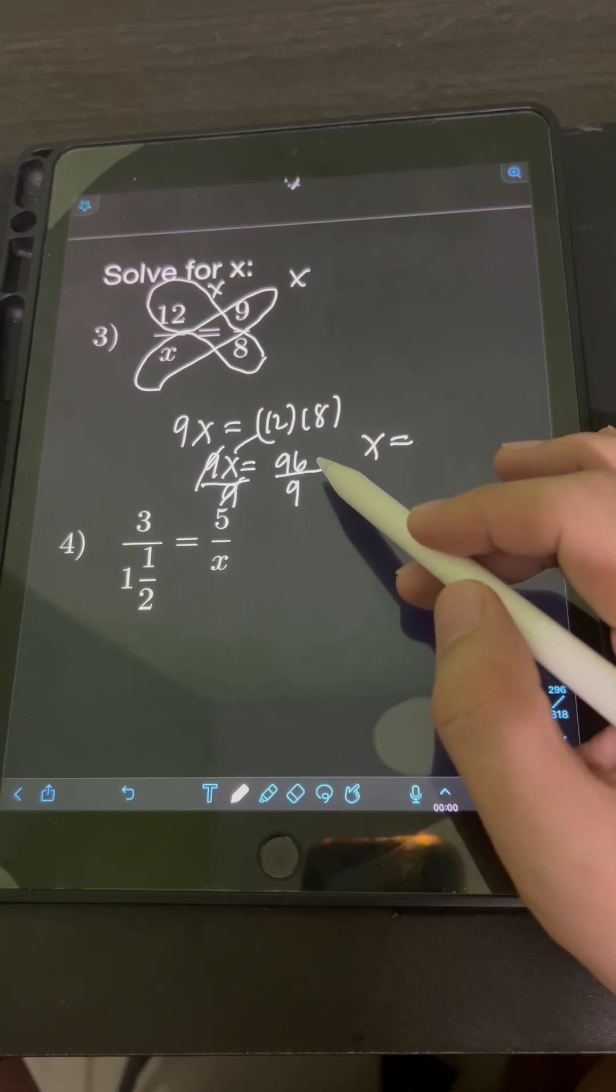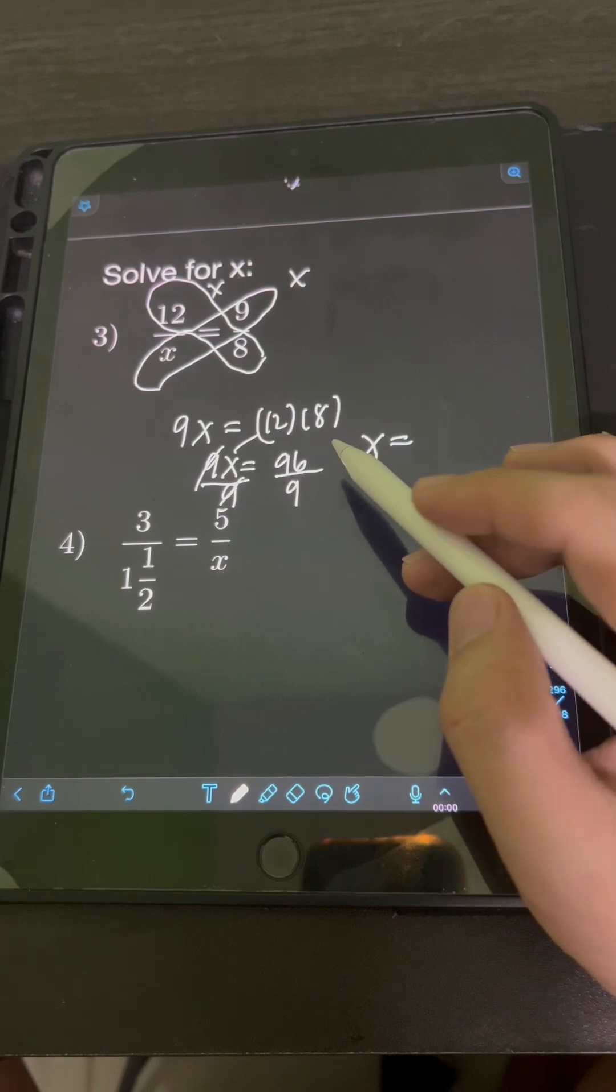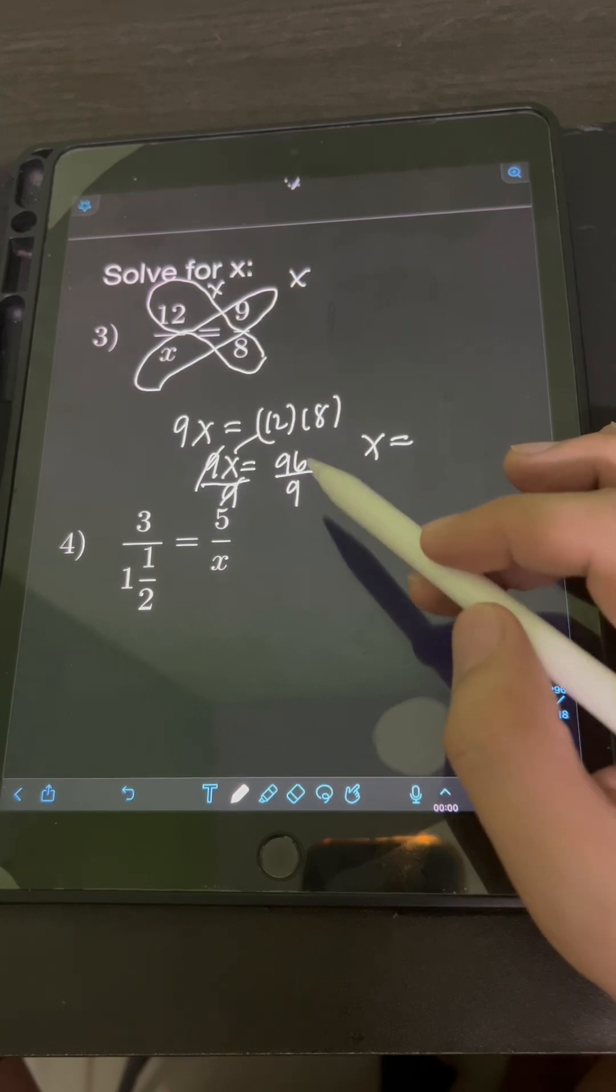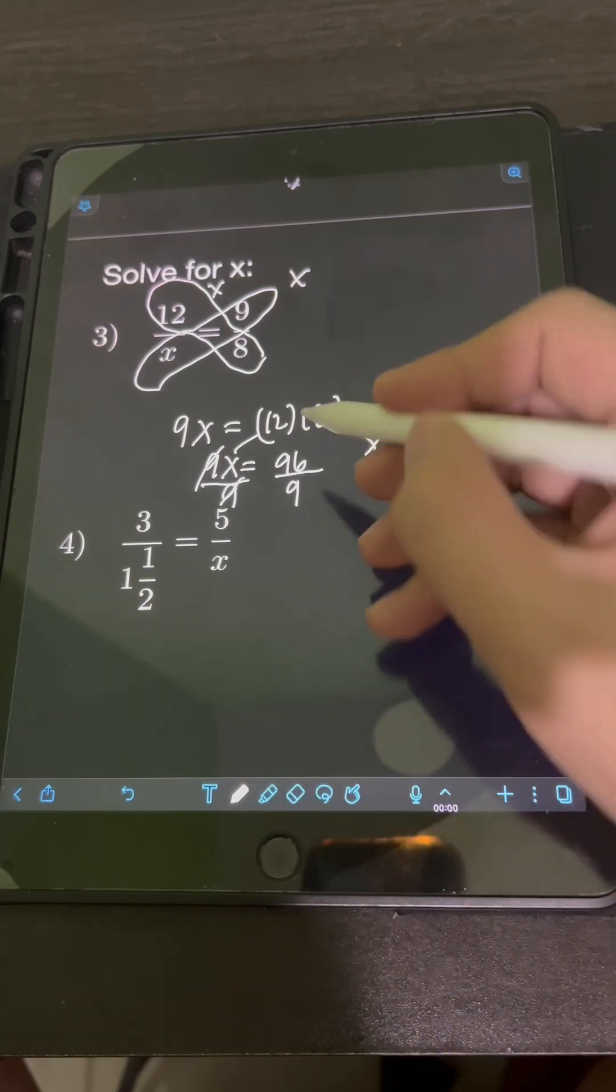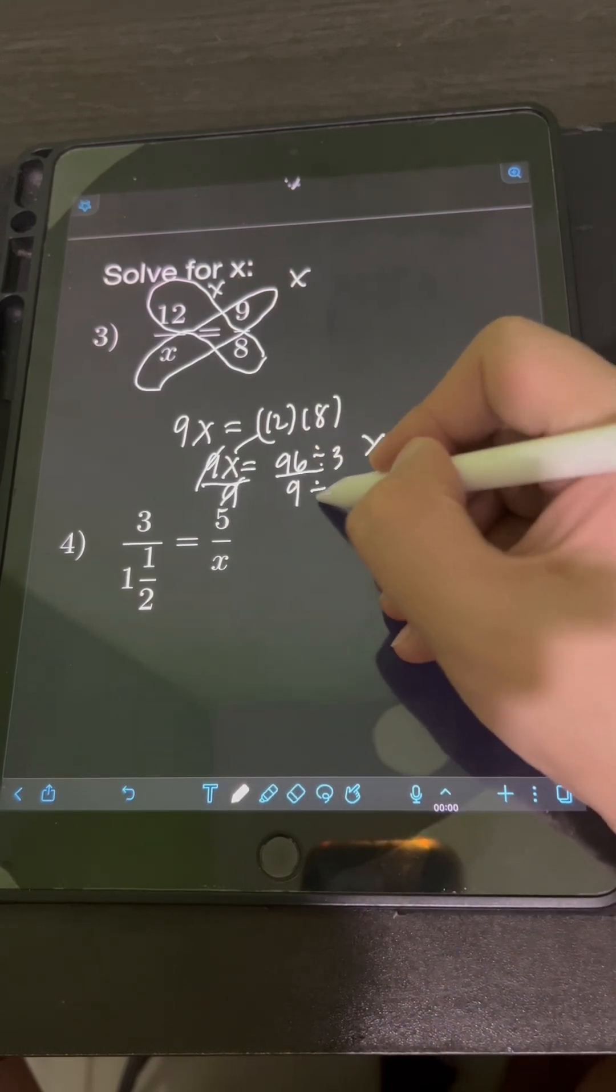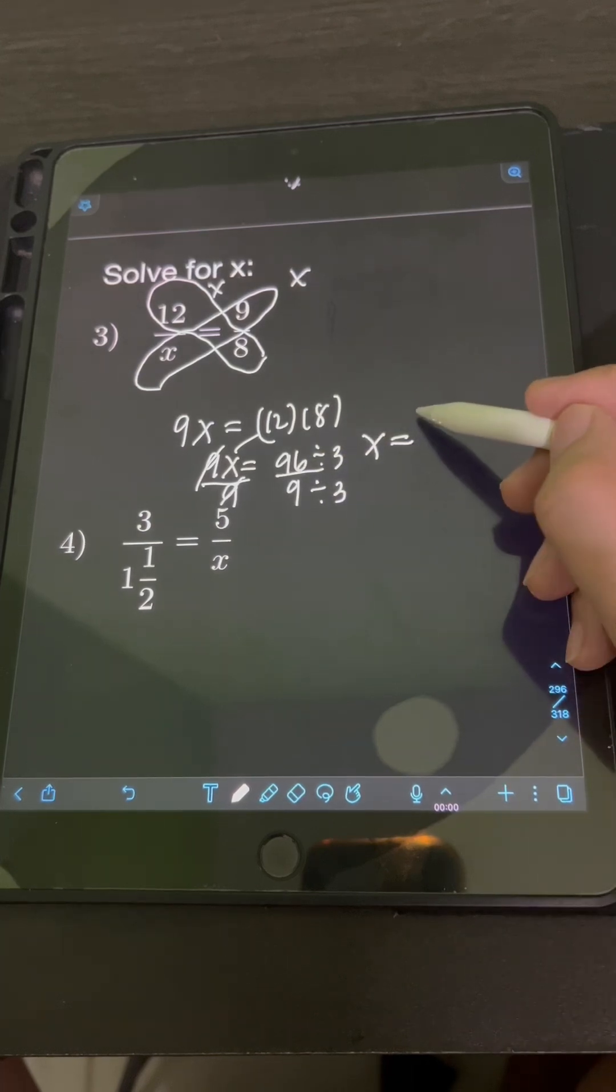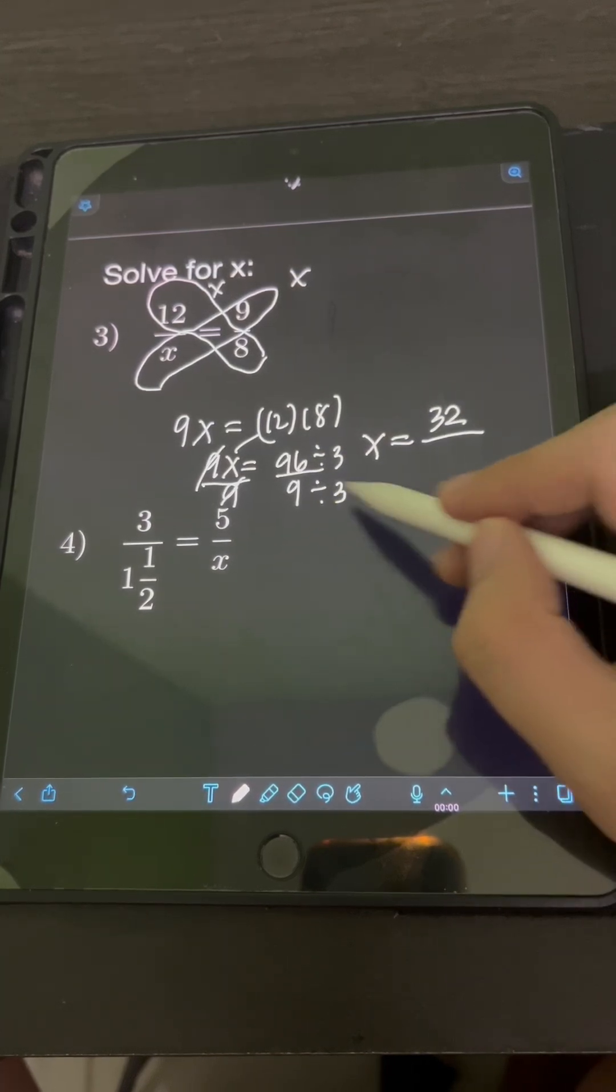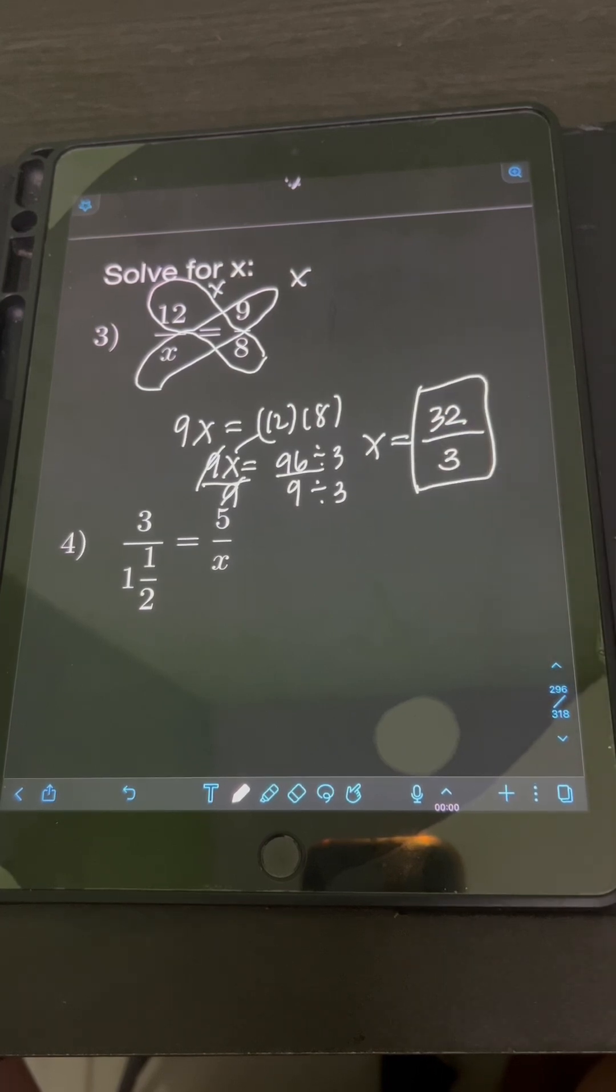But this 96 over 9 can still be simplified or reduced to lowest term. So we divide both 96 and 9 by their GCF. So the GCF of 96 and 9 is obviously 3. So we have 96 divided by 3, that's 32, over 9 divided by 3, that's 3. So the final answer is 32 over 3.